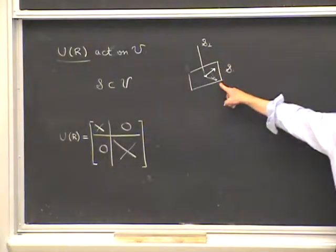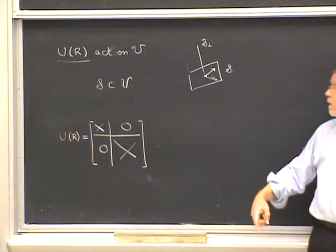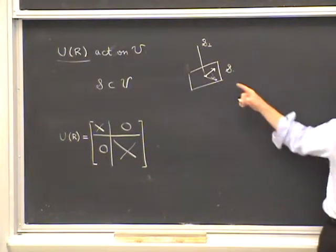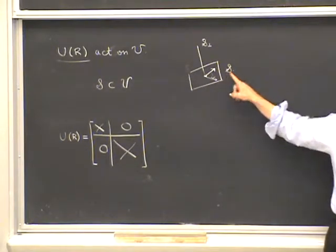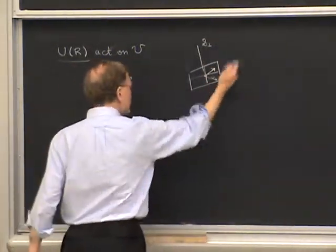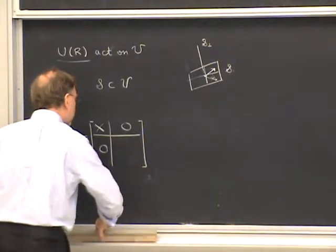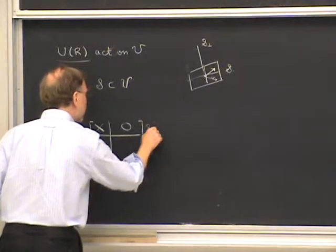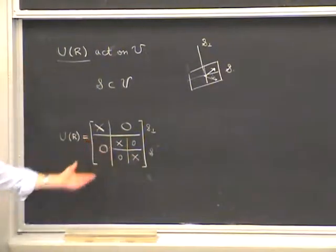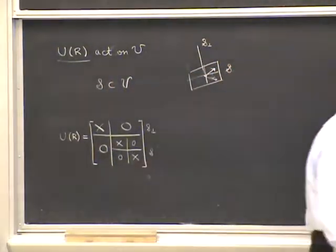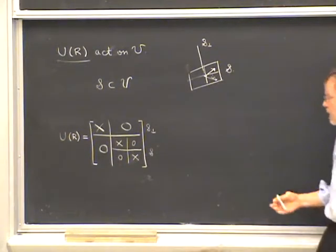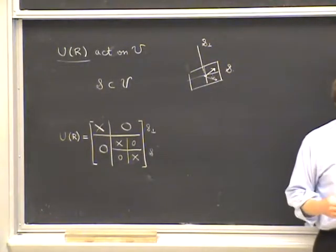Now, this subspace S may itself possess an invariant subspace — a smaller space which is invariant. If it does, we say the subspace S is reducible. If it does not possess a smaller invariant subspace, then we call it irreducible. If S is reducible, we can do another change of basis inside it, splitting S into smaller orthogonal subspaces, which corresponds to a successive block-diagonalization of the rotation operators.